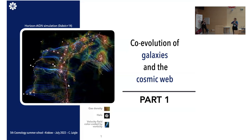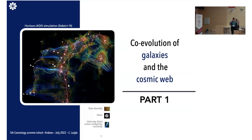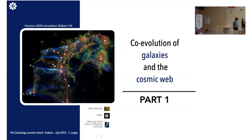Depending on the location of these halos — and therefore of the galaxies — in the cosmic web, they will be in different density environments. The content of the gas reservoir will be different, and therefore the gas accreting onto the galaxy within the halo will have different properties. This is likely to shape stellar formation within the galaxy inside the halo, and this is what we are going to discuss today and tomorrow.